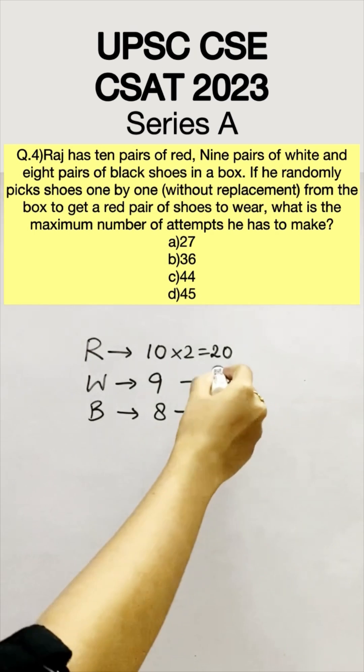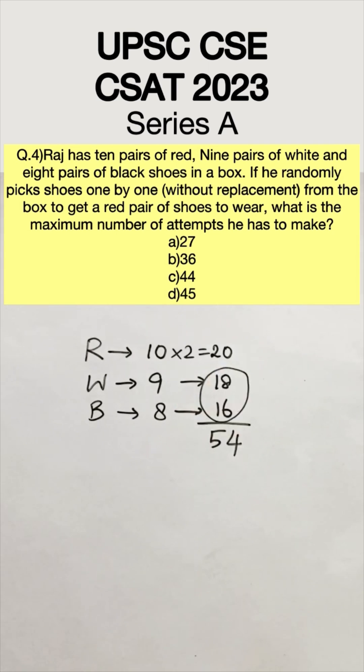The other color shoes are white and black. So the total number of white and black shoes are 18 plus 16, that is 34.